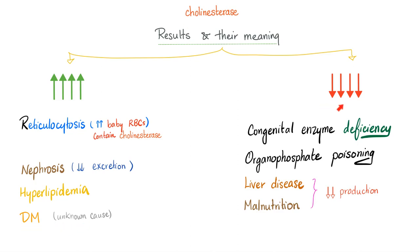What if cholinesterase level was low? It could be a congenital enzyme deficiency, or it could be organophosphate poisoning, or it could be liver disease. When the liver is toast, it's not making protein and it's not making enzyme. Or it could be malnutrition. If you're not eating, especially your proteins, you're not making.